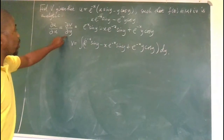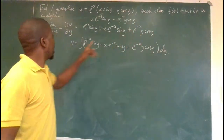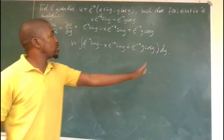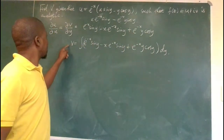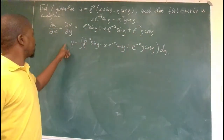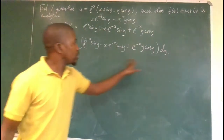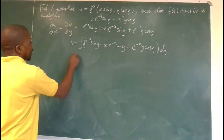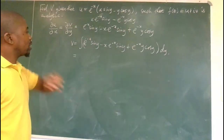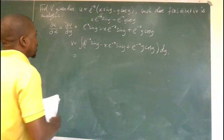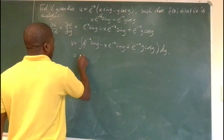This is because ∂v/∂y, when we integrate the left side, gives just v, and this integral follows accordingly. Simplifying further, taking x to be a constant, the integral of sin(y) gives -cos(y).